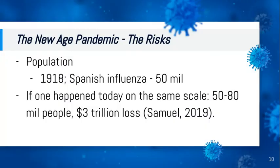Population-wise, one of the bigger historical examples was the 1918 Spanish influenza, which cost the lives of 50 million people. An article written in September of last year — before all this happened — was already warning that a pandemic was coming. They projected that if a pandemic happened at the same scale as the Spanish influenza, 50 to 80 million people would die and it would cause a $3 trillion loss.